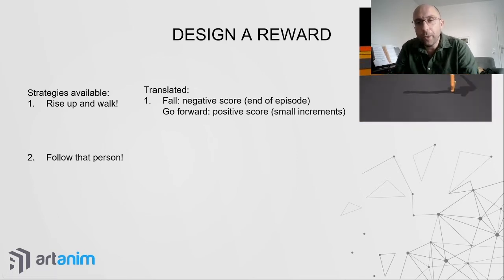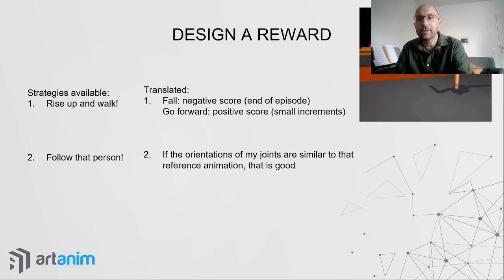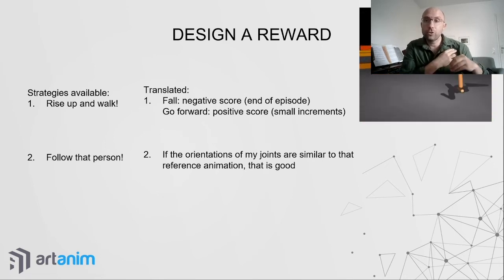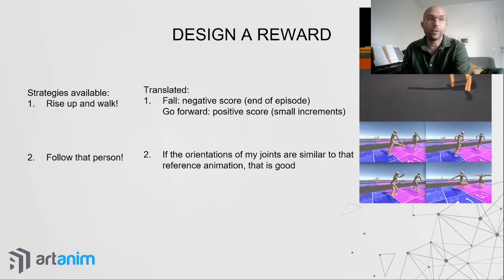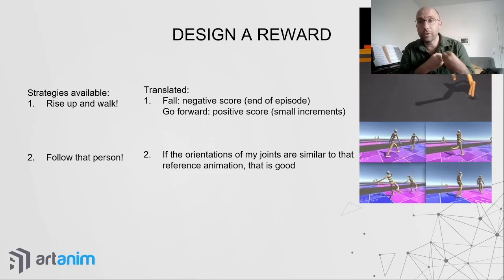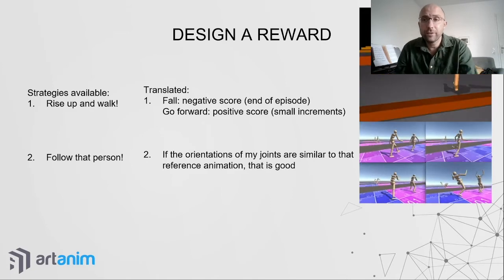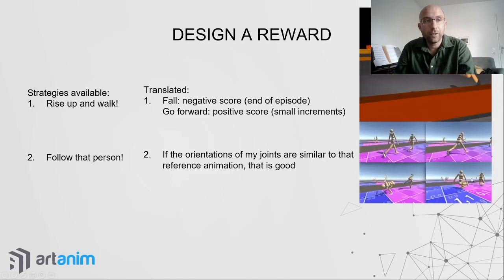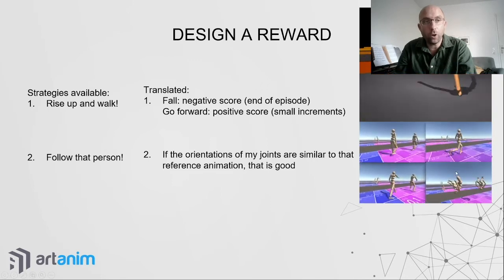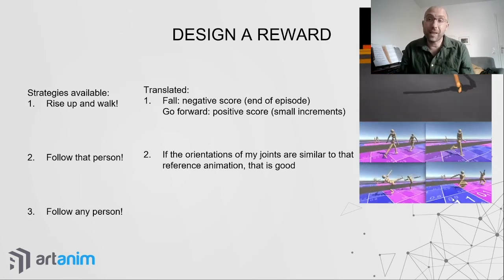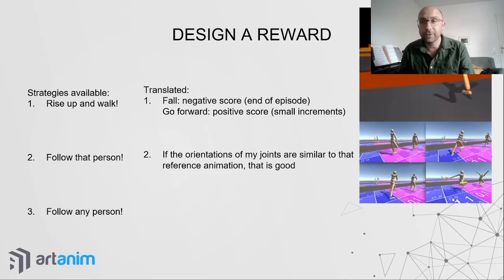Another option is 'follow that person': in numbers, this means if the rotation of my joint is similar to that of a given reference animation, this is good. A typical example is the Deep Mimic paper. Parts of this — the motion imitation part — are in the Marathon Environments. If you give it a reference animation such as a backflip, the physics-based character will also do a backflip, though it may fall down since it is physically simulated.